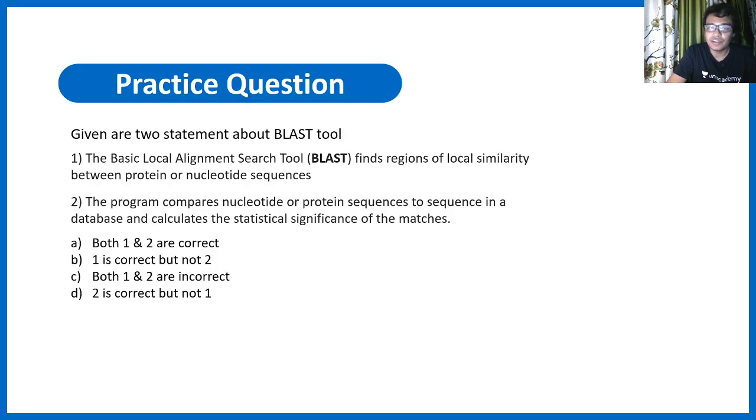Now here is a practice question for you. Given are two statements about BLAST tool. Since BLAST is their favorite, you can expect one question from BLAST. This statement says the basic local alignment tool finds regions of local similarity between proteins and nucleotide sequence. Then the second statement says the program compares nucleotide or protein sequence to the sequence in a database and calculates the statistical significance of matches. Now here are the options. So go through this question and try to let me know about the answer in the comment section.